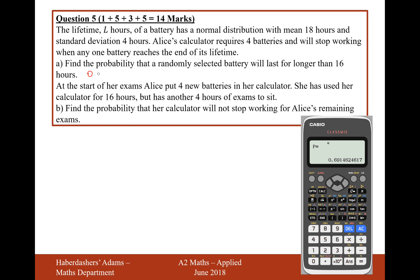That's the answer to part a — it's only worth one mark, so it's just a standard answer mark. Moving on to the next part. At the start of her exam, Alice puts 4 new batteries in her calculator. She used her calculator for 16 hours, but has another 4 hours of exams to sit. Find the probability that her calculator will not stop working for Alice's remaining exams.